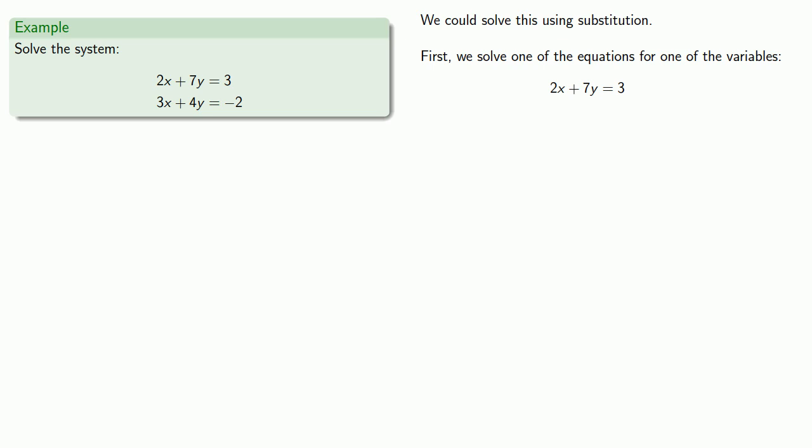The left side is a sum, so to isolate x we subtract 7y from both sides. Now we have 2x = 3 - 7y, and the left side is a product, 2 times x.